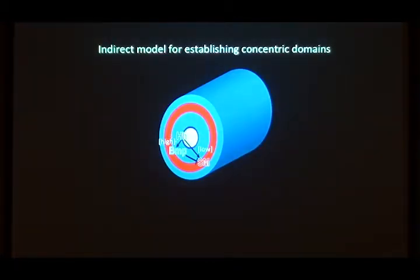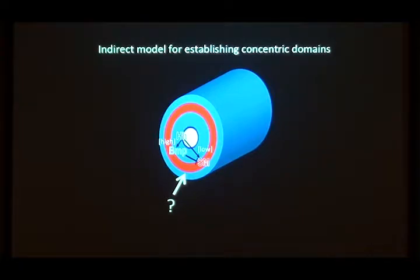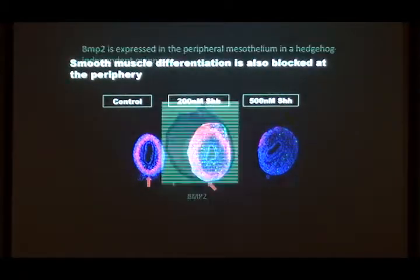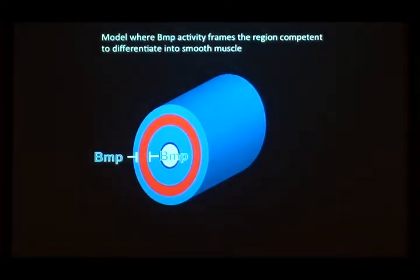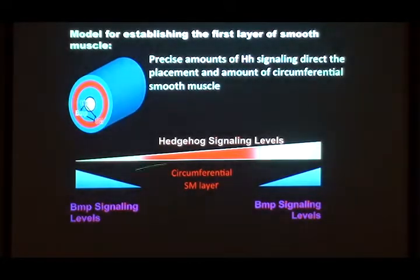So the reason you're not getting smooth muscle close to the endoderm is because high hedgehog signaling is inducing BMP4. But you do get smooth muscle further out because you're beyond the BMP4 domain yet still have hedgehog, which is necessary to induce it. You also need to block muscle from forming at the periphery — it turns out BMP2 is expressed out there at the edge, independently of hedgehog, where it can act to suppress smooth muscle formation laterally. So BMP downstream of hedgehog near the endoderm, and a second BMP at the periphery, together block muscle formation at either extreme, leaving muscle only in that sweet spot in the middle where there's not enough BMP4.